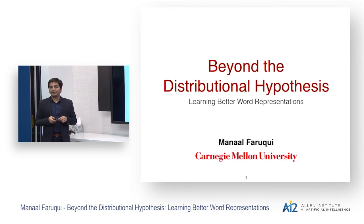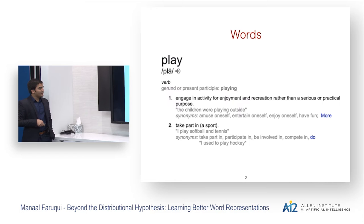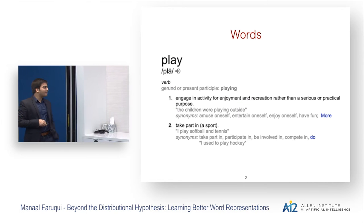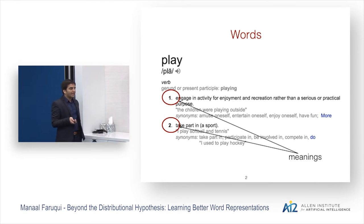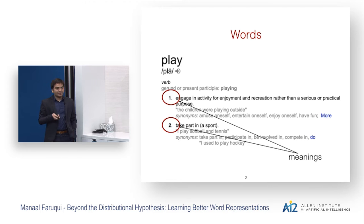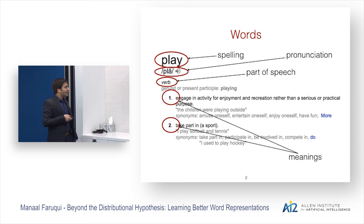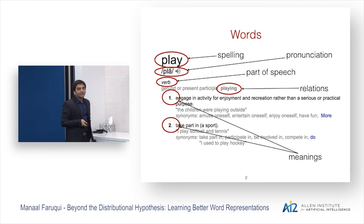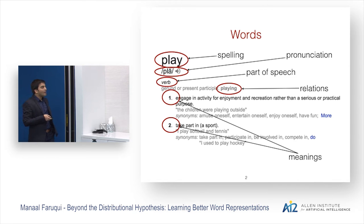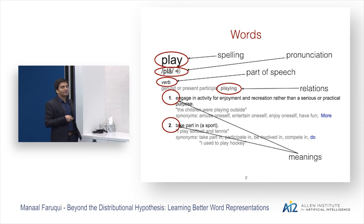Today we'll talk about how we can learn better word representations by using knowledge that goes beyond the distributional hypothesis. When you look at a word like "play," the first thing that comes to a human mind is what are the meanings of this word. But a word has a lot of other properties: it has a spelling, a pronunciation, a syntactic part of speech, and it is related to other words in different ways.